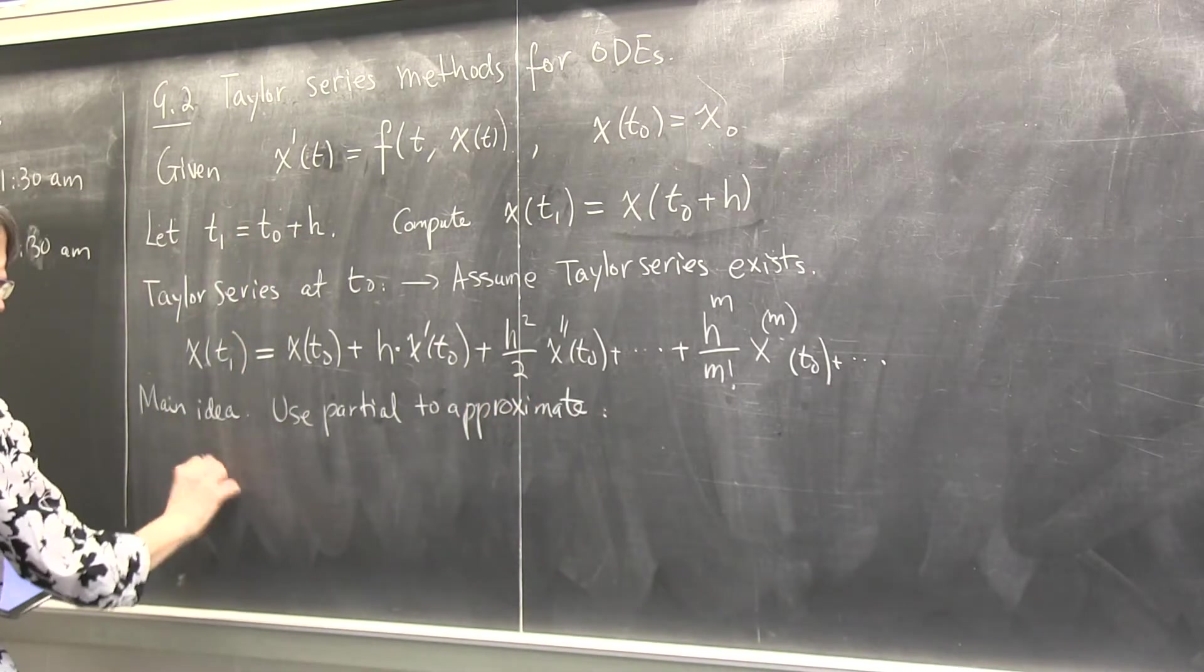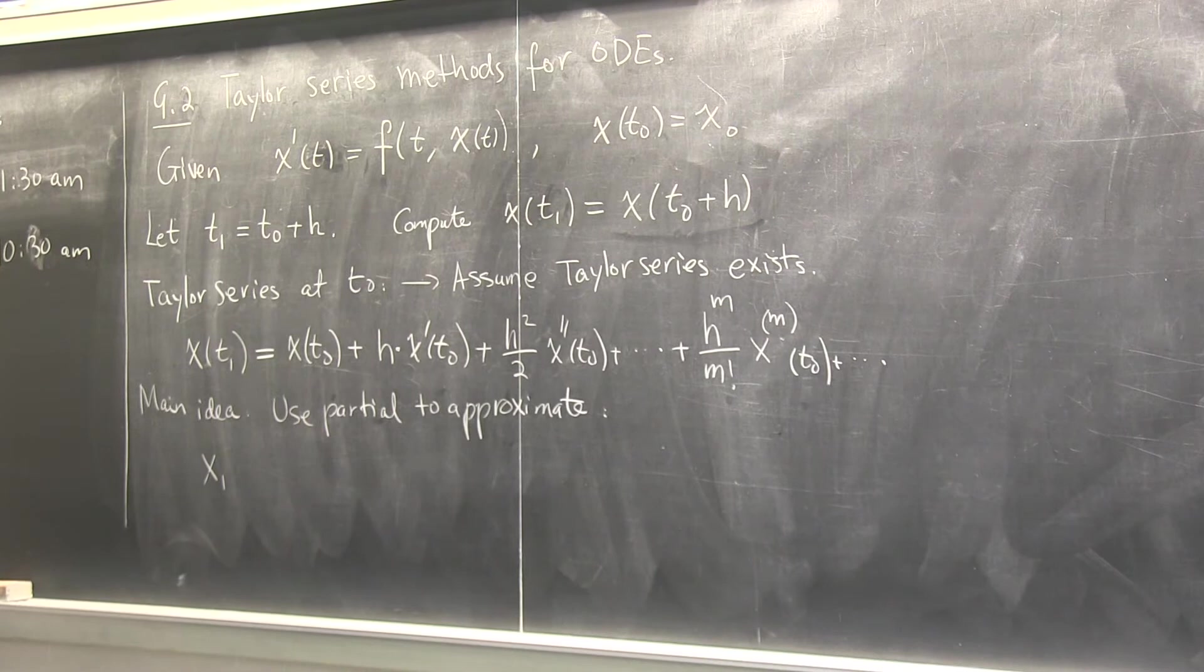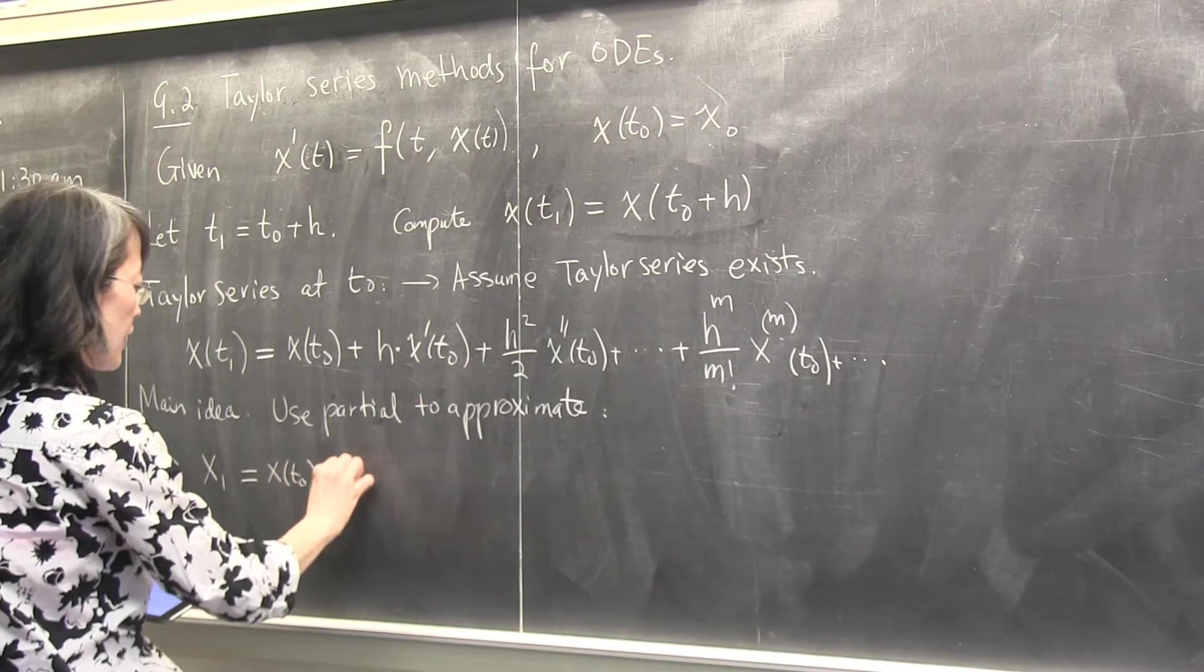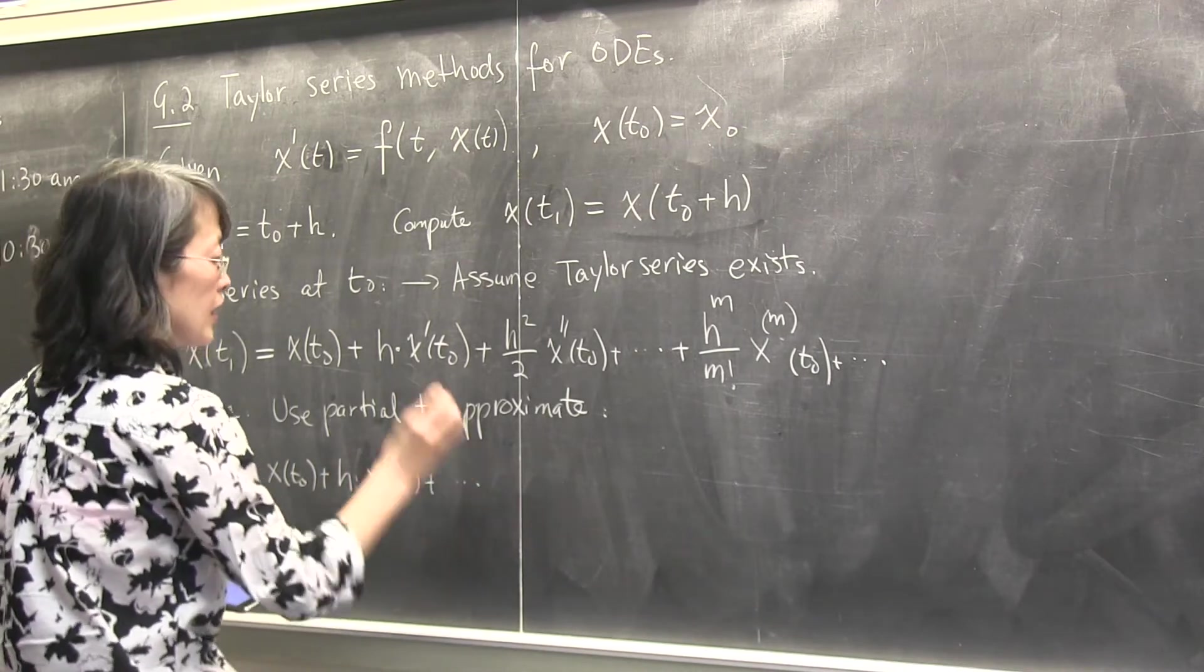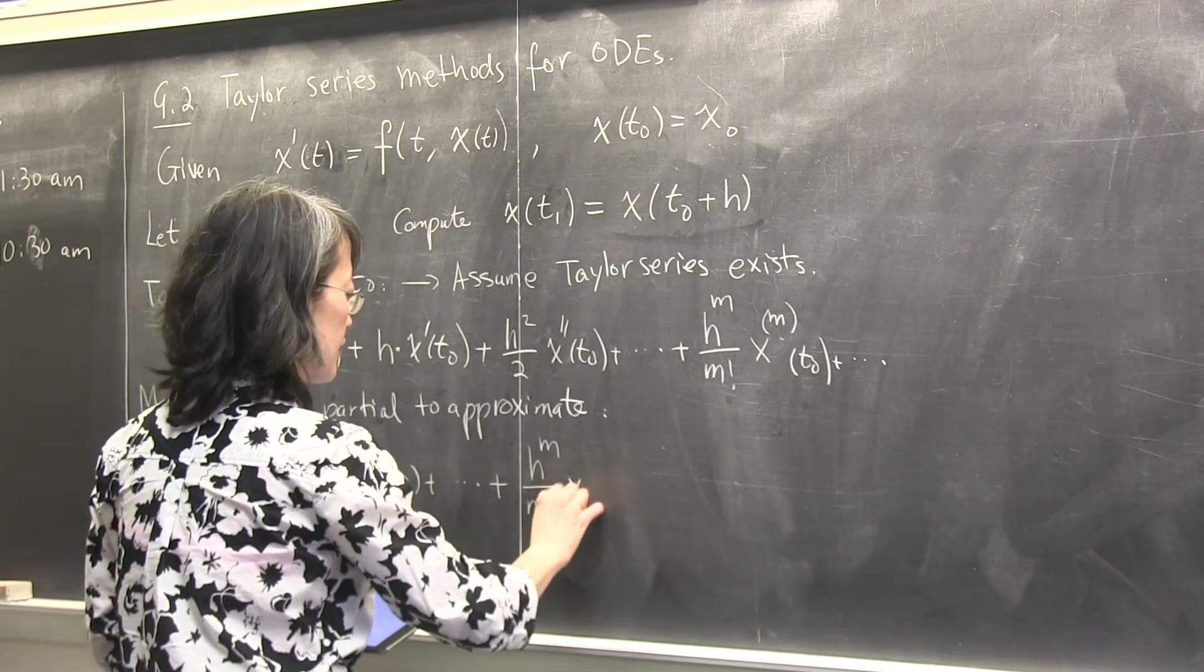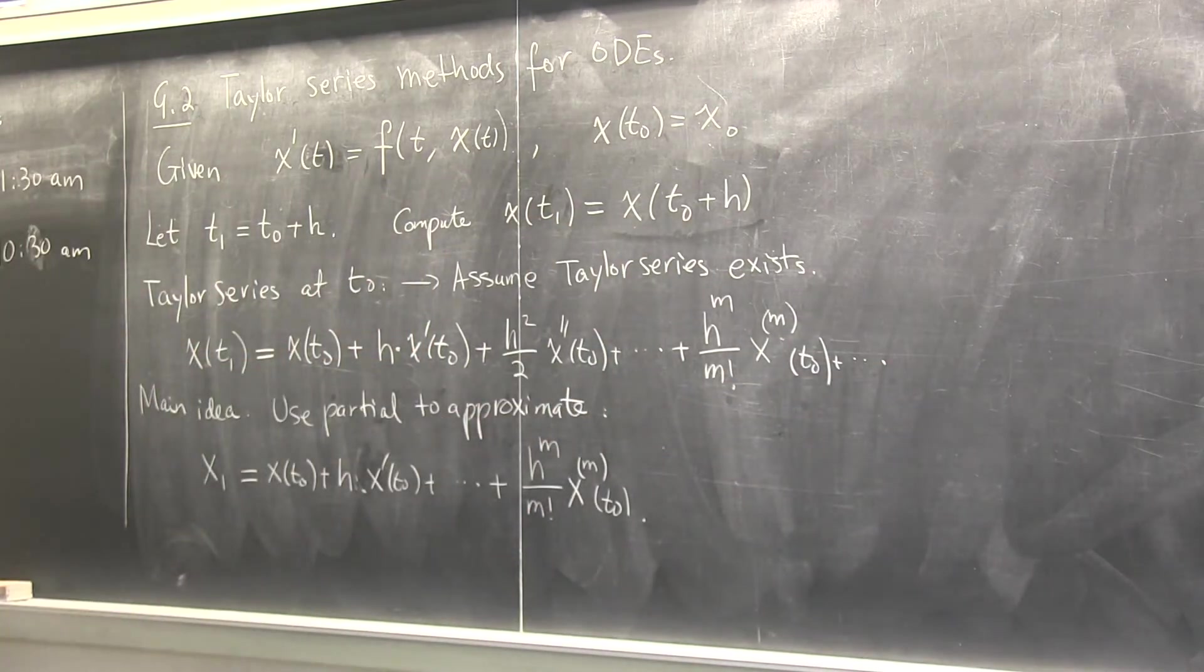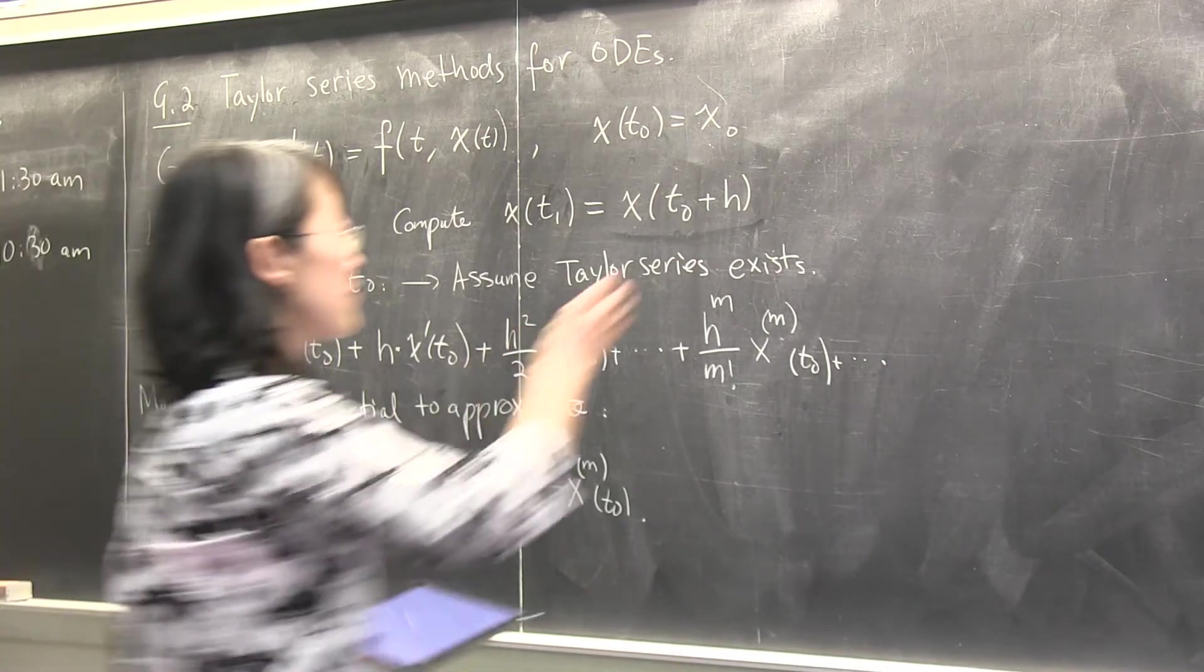That's a very simple idea. So what does it mean? That's x1 now, which is an approximation to x at t1. It's not x t1, it's my approximation. It's computed as, adding this up, x t0 plus h, x prime t0 plus, I will add up m terms, and then I stop there. And I stop. Here there's dot dot dot, there are infinitely many times that I dropped.